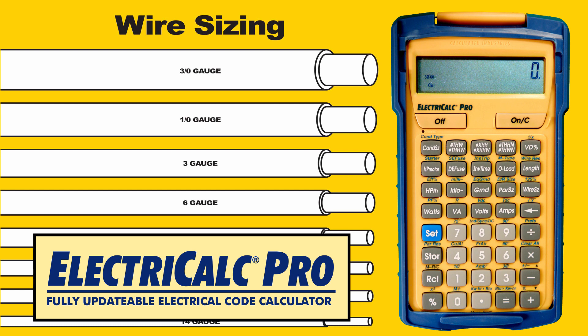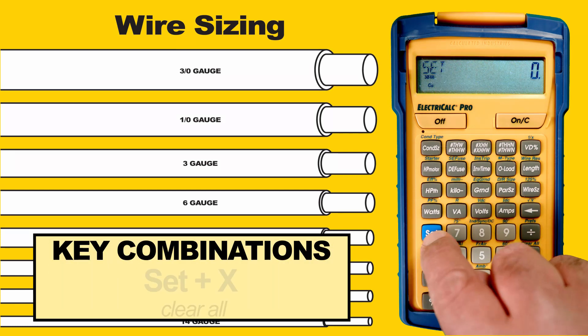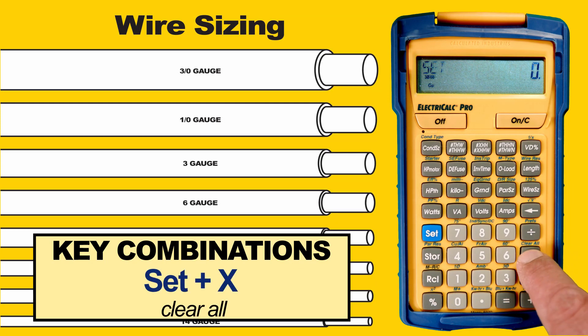We start off by doing an all clear. To do this, press the Set button then the Times button. This will set the unit back to the default settings. It also reminds you what code year you are working in — as you can see, we're working in NEC 2020.